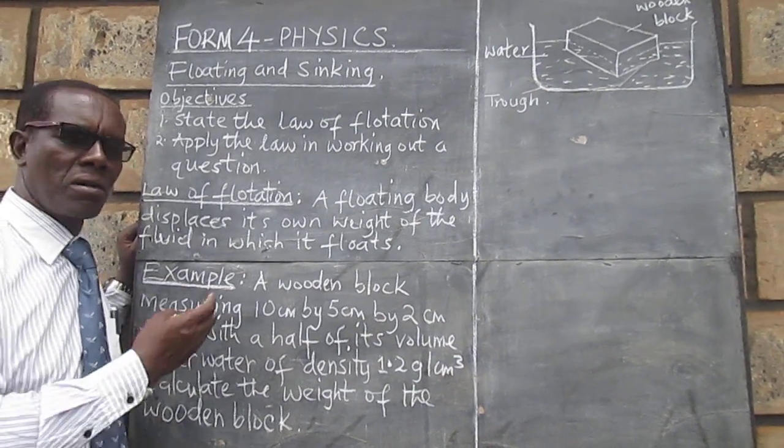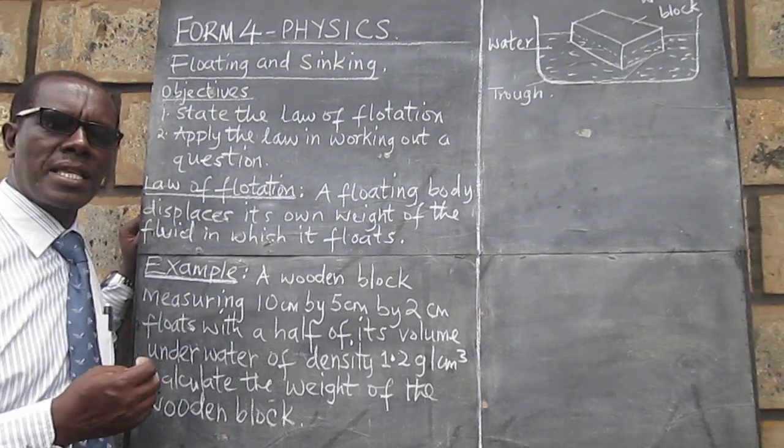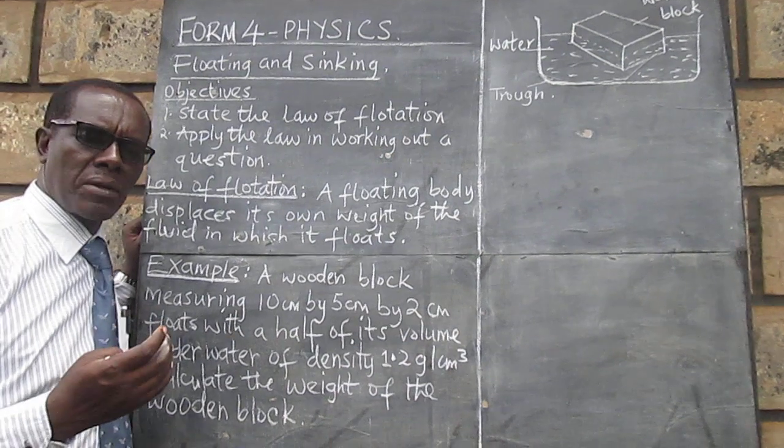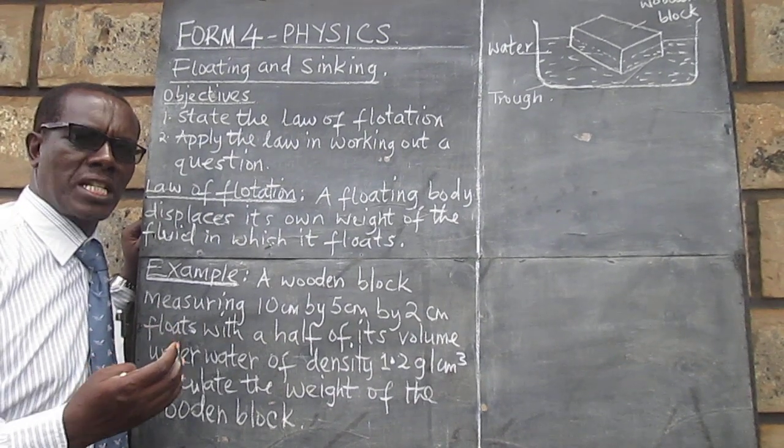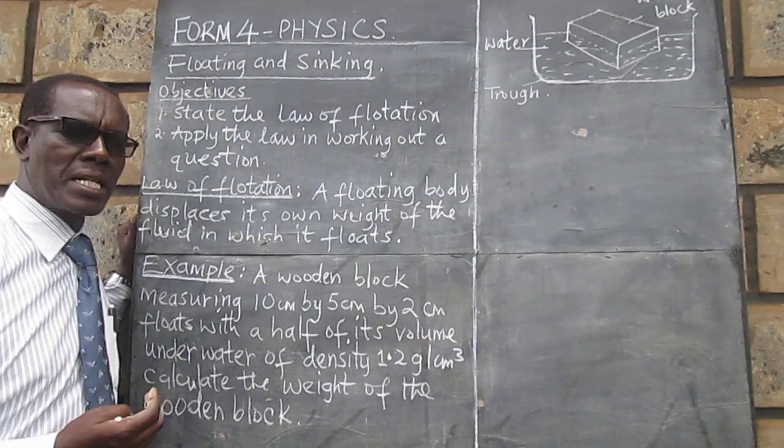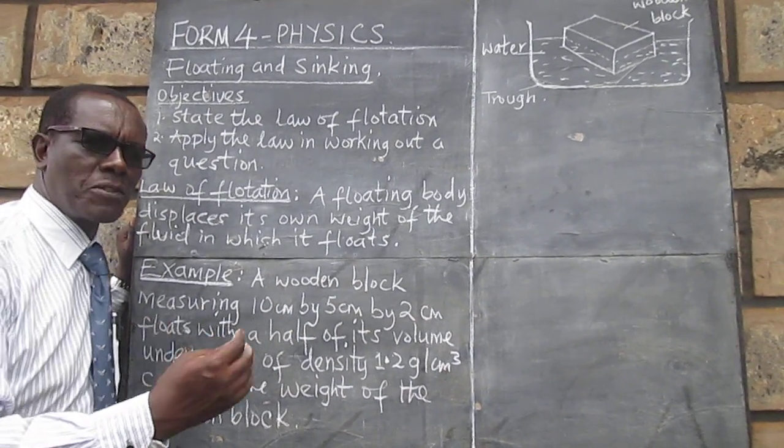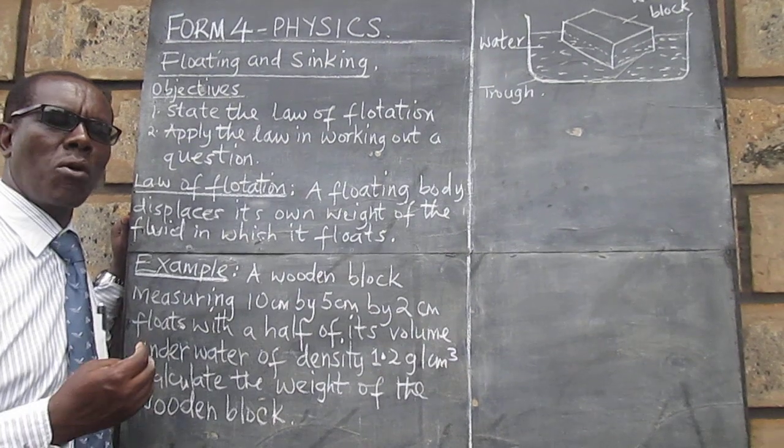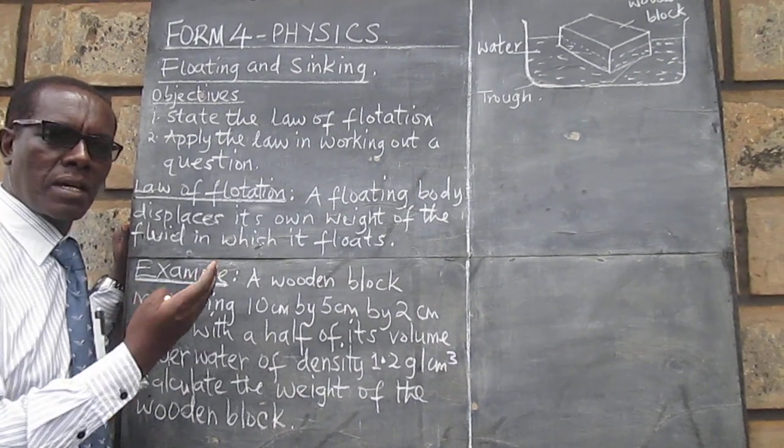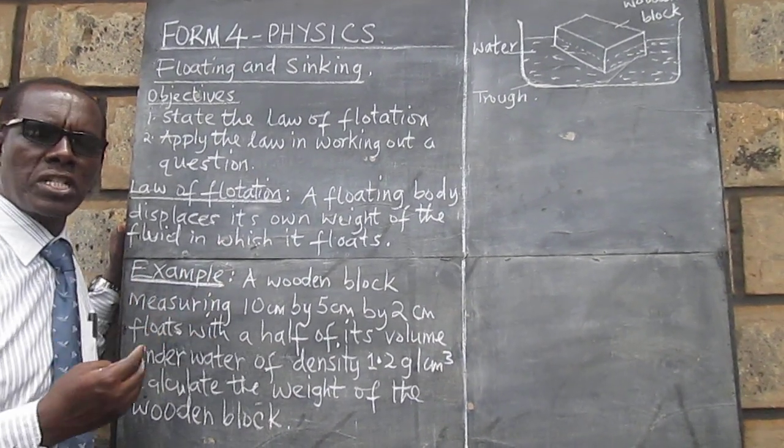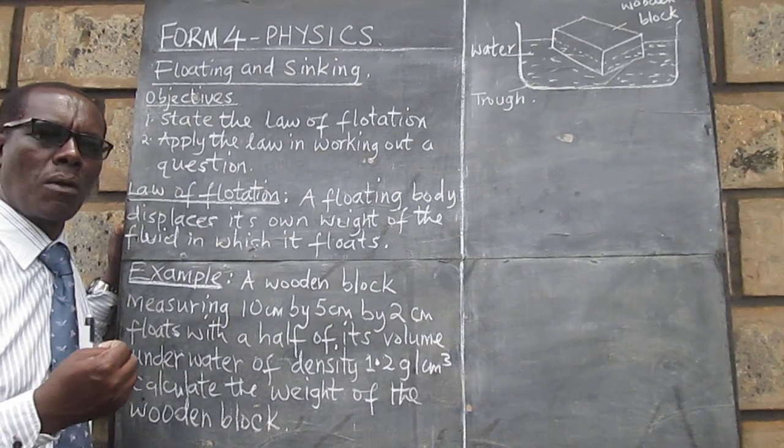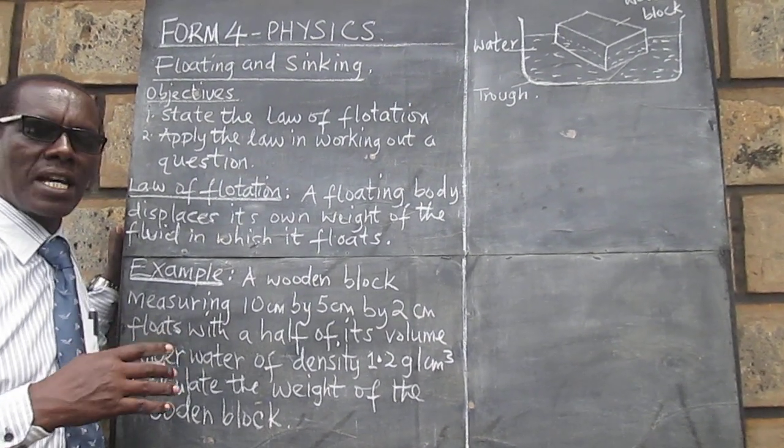So what the law says in this case is that if that volume of water was to be weighed, the mass of that water displaced will be equal to the mass of the object that is floating in that water. And I've used water here as just an example.